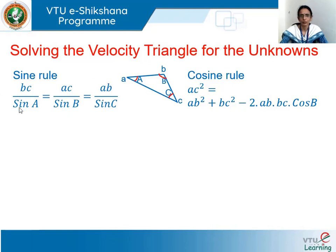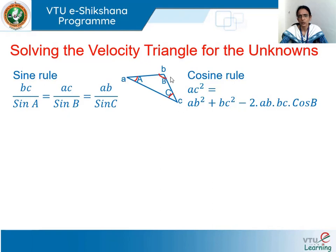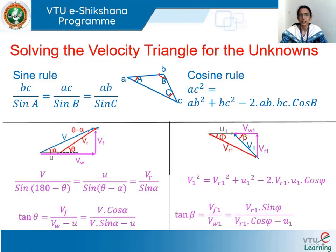The cosine rule is generally used when we know one angle and the two adjacent sides. For example, if sides AB and BC are known and the included angle B is known, we can determine AC as: AC² = AB² + BC² − 2·AB·BC·cos B. This same approach can be extended to velocity triangles as well.